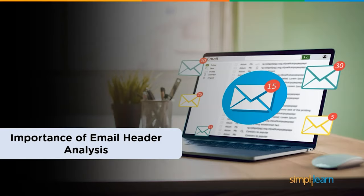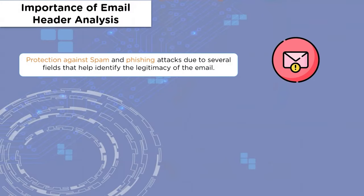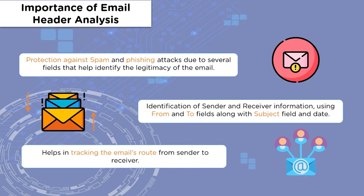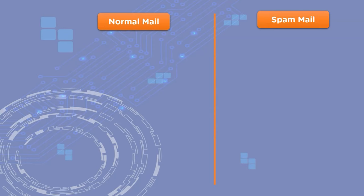The importance of email header analysis includes: protection against spam and phishing attacks, using fields that help identify whether a given email is spam or not, and whether it is authenticated. It also enables identification of sender and receiver information, allowing us to verify whether the sender's address matches. Lastly, tracking an email lets us see what different servers it passed through, and if it was stopped at any channel or server, we can identify a problem.